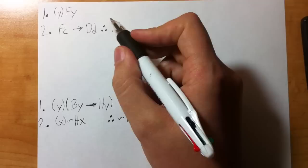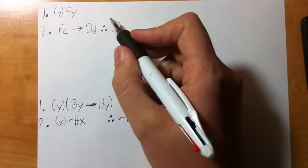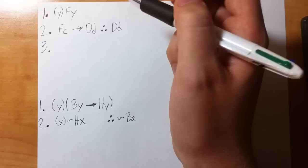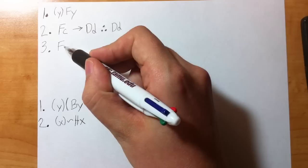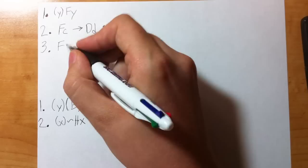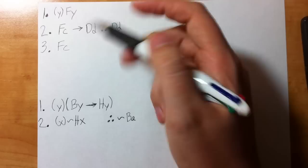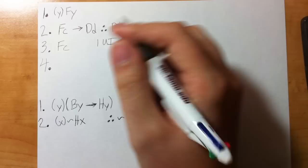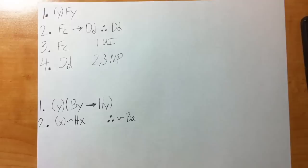Looking at this proof, DD is my conclusion and there's my universally quantified statement, so right away I'm thinking I'll use UI. I could pick any lowercase letter to replace Y — A or B — but it makes the most sense to pick C because I have a match. Don't just always choose A; think about what you're doing. Now that I have that match via UI, I can apply MP on lines two and three to finish the proof.